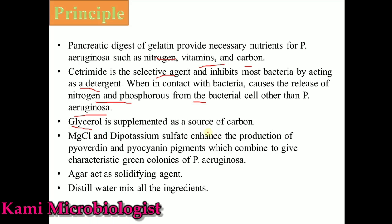Glycerol mostly provides the carbon source. Magnesium chloride and dipotassium sulfate together promote the production of pyoverdine and pyocyanin pigments. These two molecules combine to give a characteristic green color to the colonies, which is the hallmark of Pseudomonas aeruginosa. Agar acts as a solidifying agent providing a stable surface for bacterial growth, and distilled water is used to mix all the ingredients.